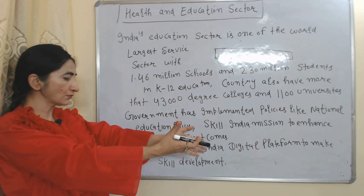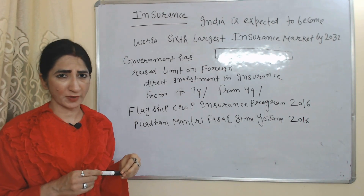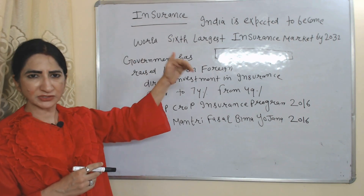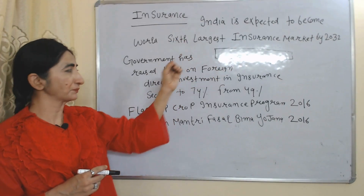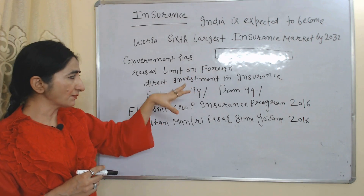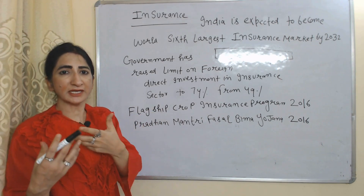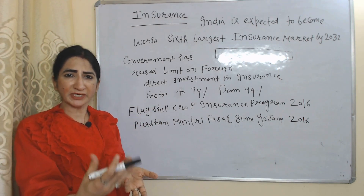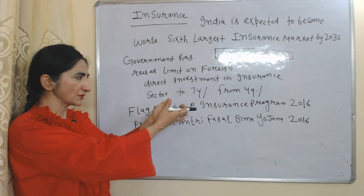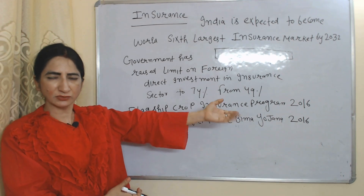The government has implemented policies like the National Education Policy and Skill India Mission to enhance education outcomes, and also launched the Skill India Digital Platform for skill development. Regarding insurance — also part of the service sector — India is expected to become the world's sixth largest insurance market by 2034. The government increased the FDI limit in insurance companies to 74% from 49%, and introduced a flagship crop insurance policy in 2016.